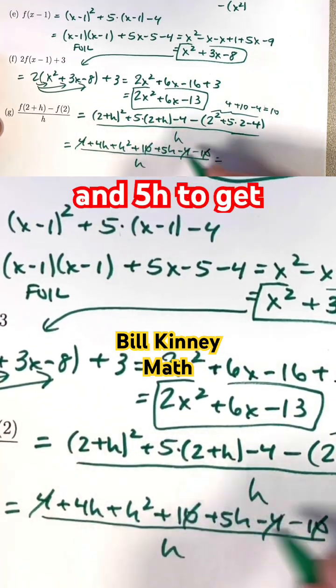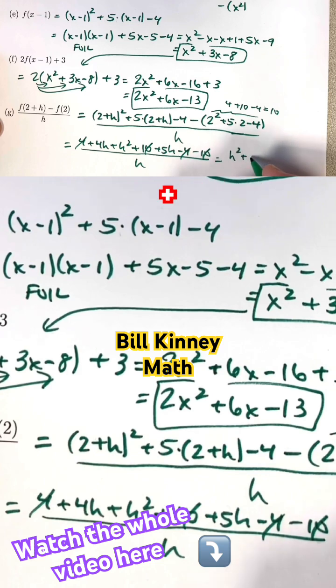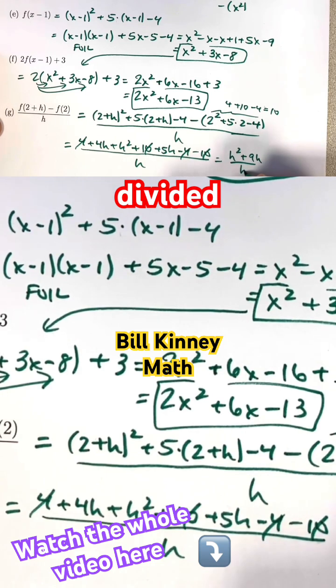You can combine the 4h and 5h to get 9h. So we get h squared plus 9h. All divided by h.